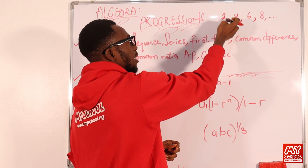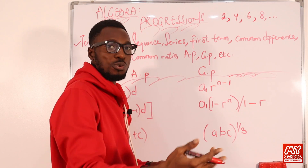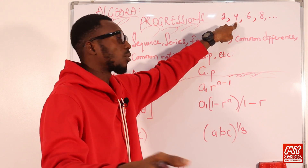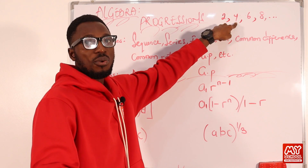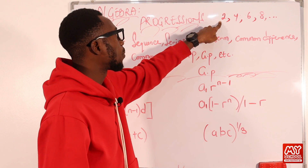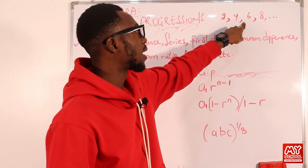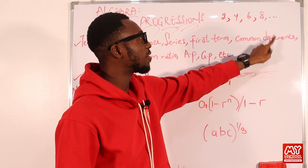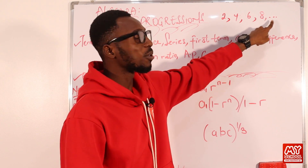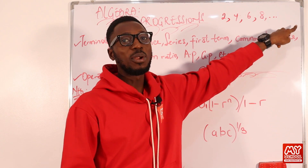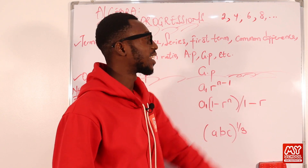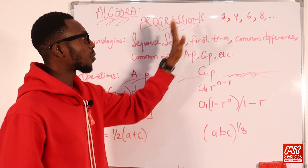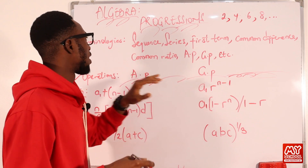So the difference is 4 minus 2, that is 2. If I add 2 to the previous item, it gives me the next consecutive item. So 2 plus 2 is 4, 4 plus 2 is 6, 6 plus 2 is 8. To get the next item, I add this common difference: 8 plus 2 makes 10, and 10 plus 2 makes 12. So the common difference is that value by which a particular sequence increases or decreases.